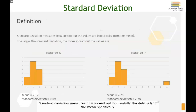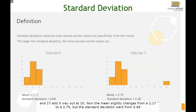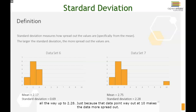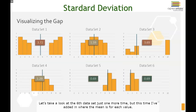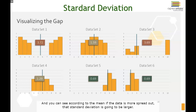So what do you think it's measuring? Standard deviation measures how spread out horizontally the data is from the mean. The larger the standard deviation, the more spread out it is. If we take data set 6 and add one more value way out at 10, the mean slightly changes from 2.17 to 2.75, but the standard deviation jumps from 0.69 all the way up to 2.28, just because that outlier makes the data more spread out. It's all based on how squished together your data is around the mean — that's what standard deviation is measuring.